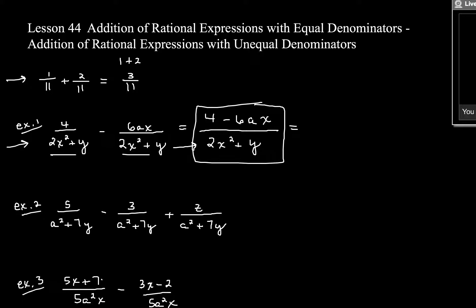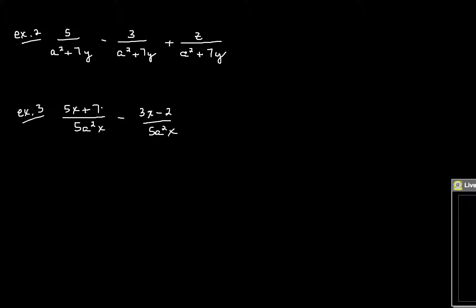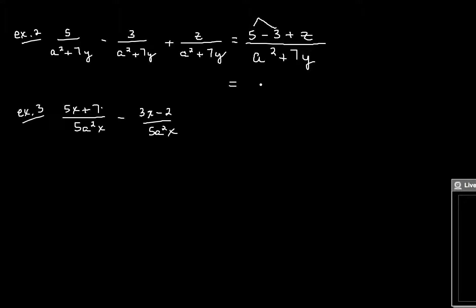That's the easiest scenario. Let's get a little bit tougher. This one — if you look, all the denominators are the same. So if all the denominators are the same, then we just recopy the denominator: a squared plus 7y. And we just write what's on the top. So we have 5 minus 3 plus z. And you can see that 5 minus 3 is going to be 2, so you have to simplify. So we'd say 2 plus z all over a squared plus 7y.